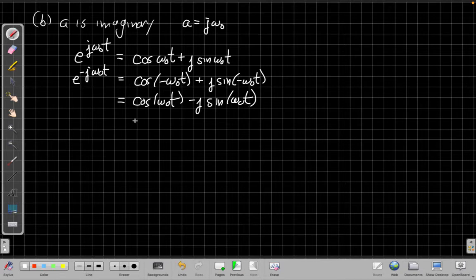And using the properties that cosine is an even function and sine is an odd function, I can rewrite the negative case like this. And so now I say if I wanted to just be left with a cosine, I could add these two terms.